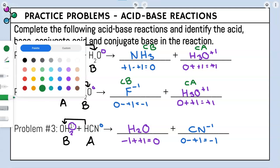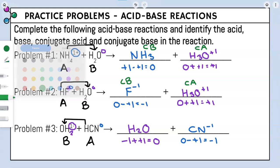Figuring out our conjugate acid and conjugate base — our bases produce our acids. Our base produced H2O, so that's going to be our conjugate acid. And our acids produce the conjugate base — HCN, our acid, goes to CN 1-, that's going to be our conjugate base. And that is our answer for problem number three.